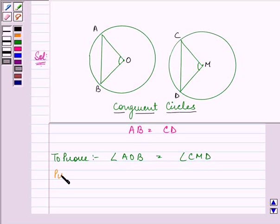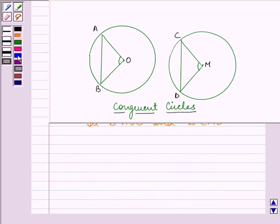Now let us start with our proof. In triangle AOB and triangle CMD, we have AB equals CD. It is given to us in the question that they are equal chords of these congruent circles.